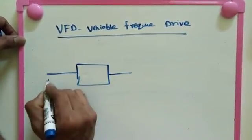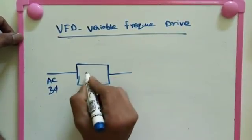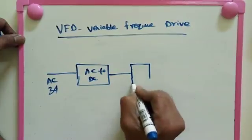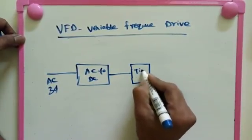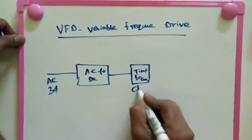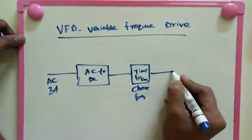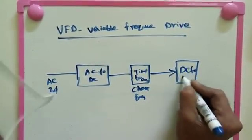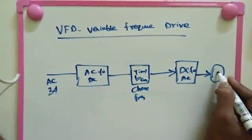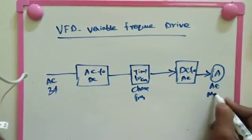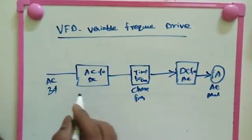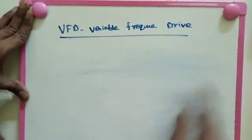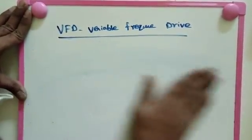Here is the basic block diagram of VFD. We have AC supply incoming — either three phase or single phase. Then AC to DC conversion, followed by a timing signal to change the frequency. Then DC to AC conversion, and finally the AC machine output.